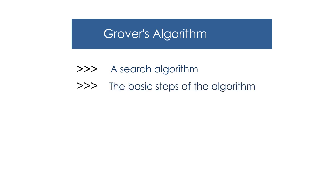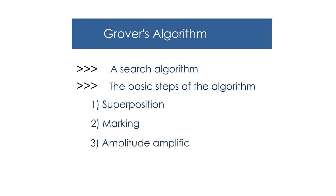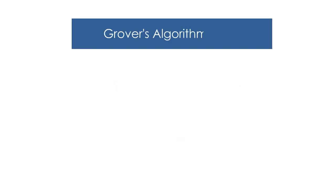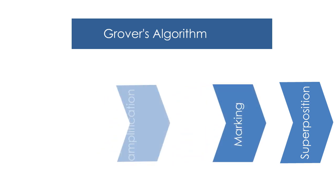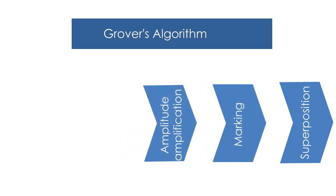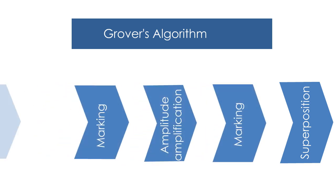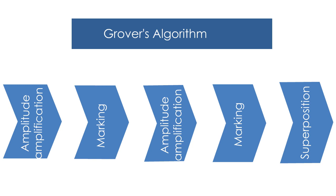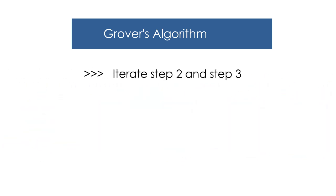The basic steps of Grover's algorithm are: number one, making superposition; number two, marking of the data you want to find; and number three, amplitude amplification. We do these steps in the following manner: first superposition, then marking, followed by amplitude amplification, then again marking and amplitude amplification, and so on. By iterating steps two and three you can get a better answer.